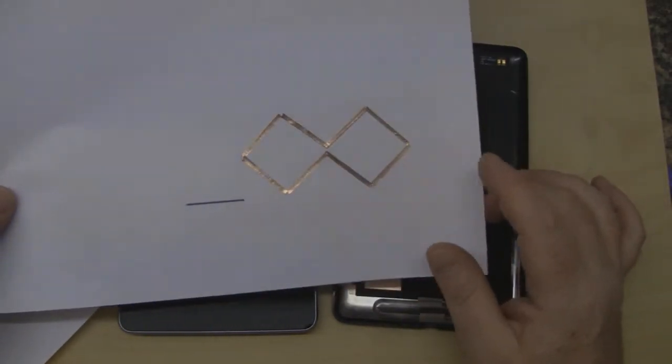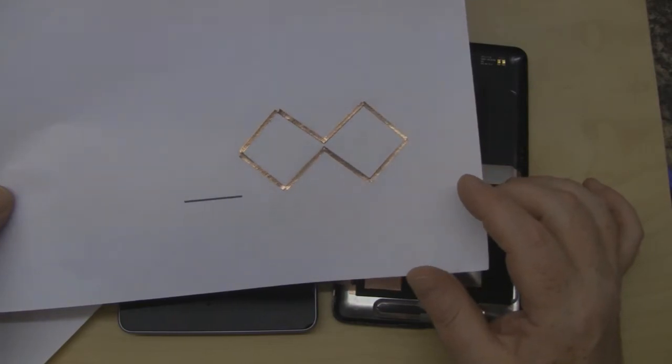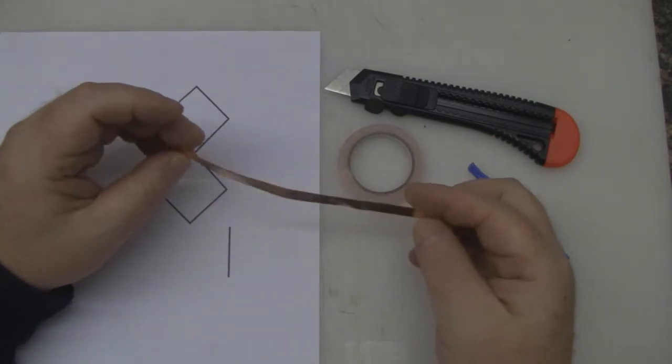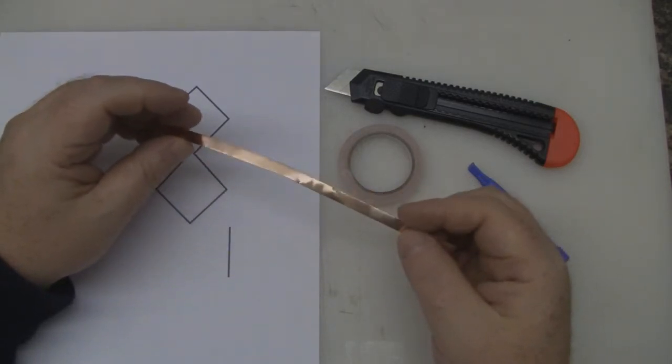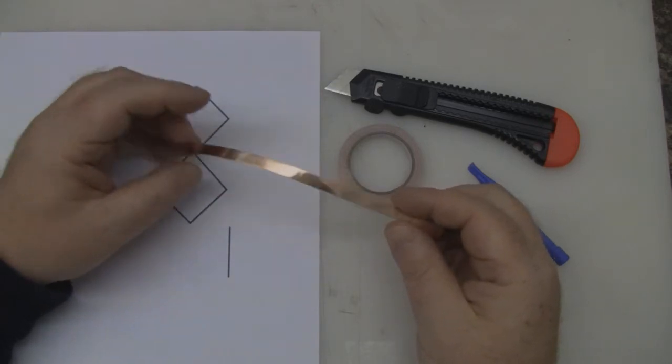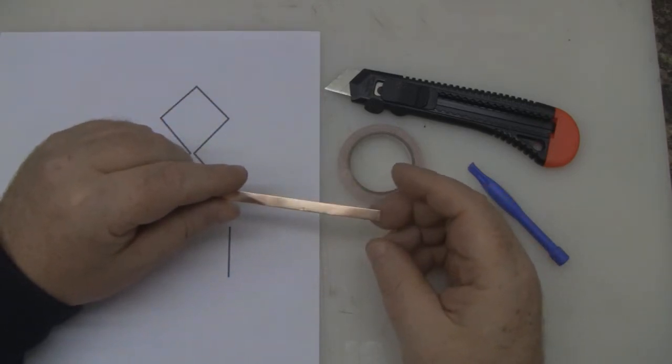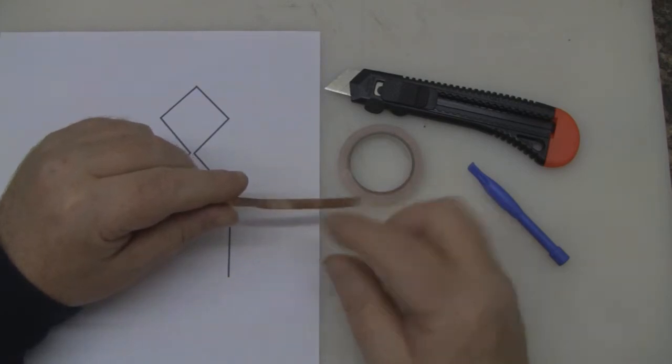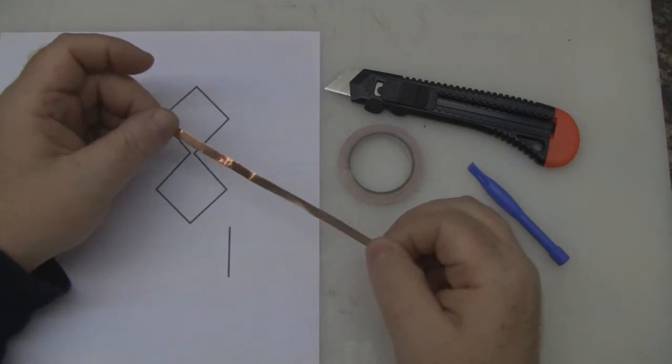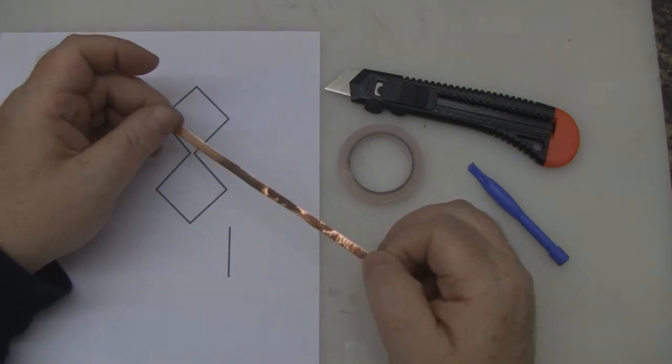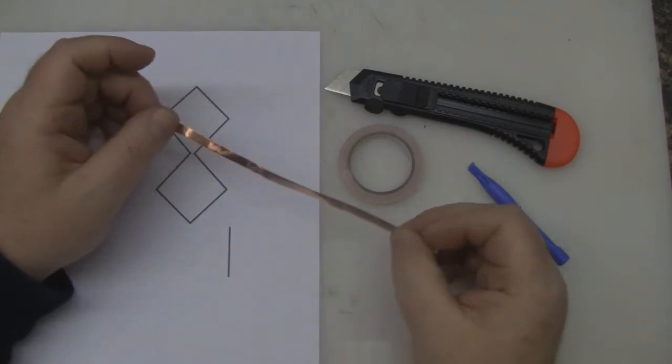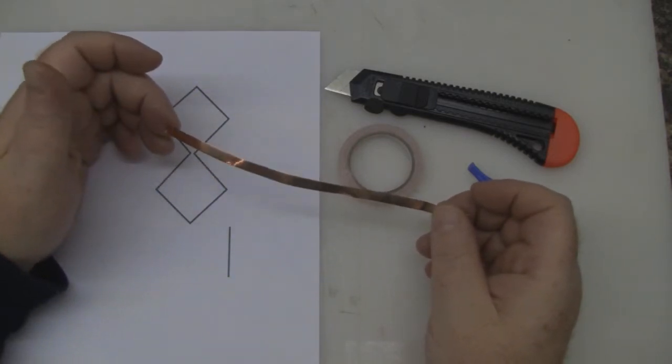I'm using this copper tape you can buy on eBay. It's a little bit thicker than what I want for this application. I couldn't find any that is 2 millimeters thick—this is actually 6 millimeters thick. We're going to cut it down into strips of 2 millimeters.